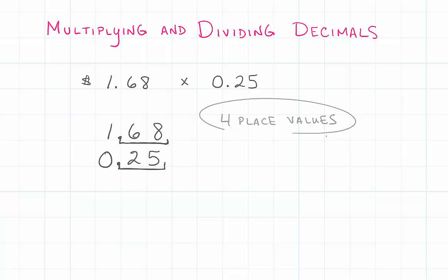I like to write it down because this tells me that I've got to put the decimal point four place values back to the left when I'm finished. Right now, I'm going to erase my decimal point and look at these two numbers as whole numbers: 168 times 25.